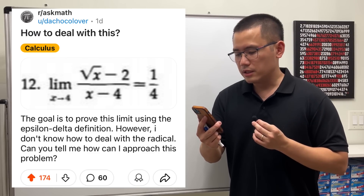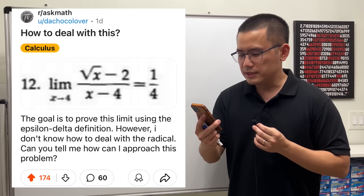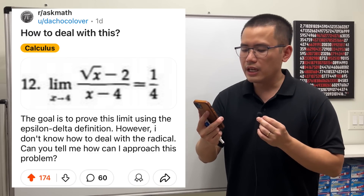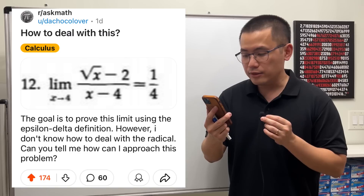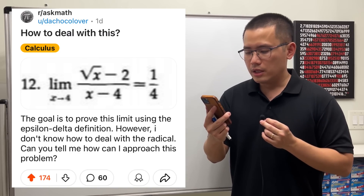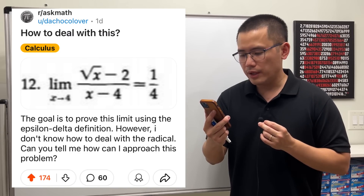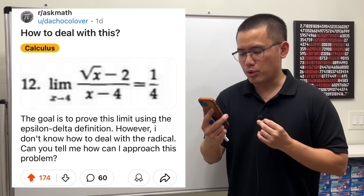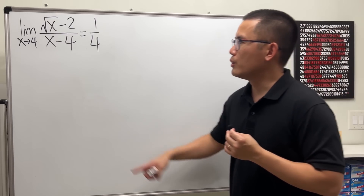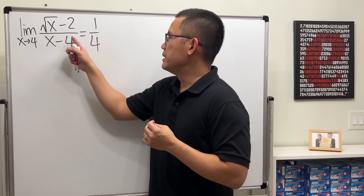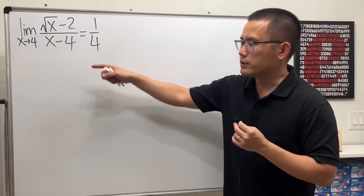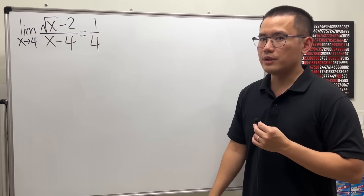The goal is to prove this limit using the epsilon-delta definition, but how do we deal with the radical? Sure, let's have a look. We will show this limit is indeed equal to 1/4 by using the epsilon-delta definition.